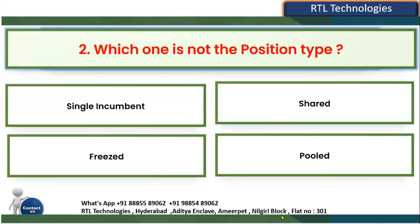The next question: which one is NOT a position type? Whenever we are creating a position, we specify the type of position, and we have four different types. From the four options — single incumbent, paid, shared, pooled — which one is not a position type?